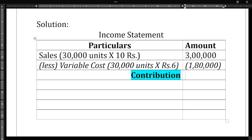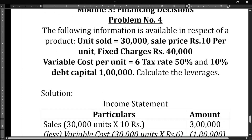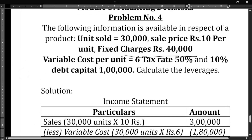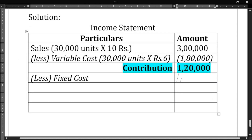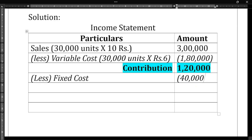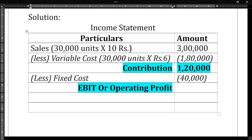After deducting variable cost from sales, we get contribution, which is ₹1,20,000. From contribution we deduct fixed cost of ₹40,000. When we deduct that, we get EBIT — also known as operating profit — which is ₹80,000.